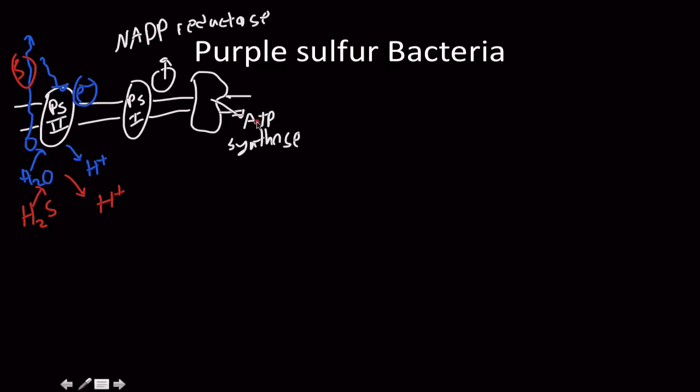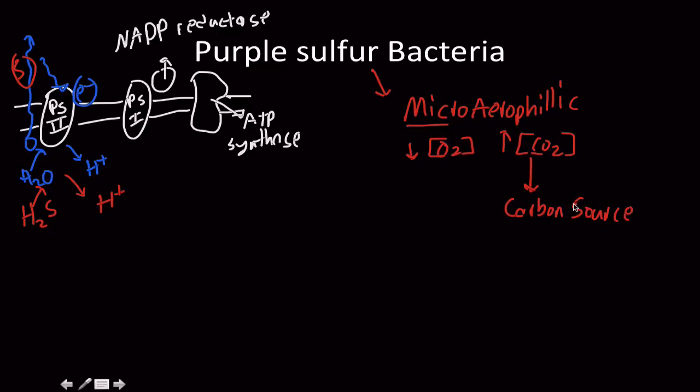The thing that is really interesting about these guys is they are microaerophilic. So they prefer to have low oxygen concentrations and relatively high concentrations of CO2. Why do they want to have a high concentration of CO2? Because that is one of the carbon sources for them. CO2 is a carbon source for those bacterium. And this is just a variant of a photosynthetic bacterium, but its metabolic pathway is very, very much different.